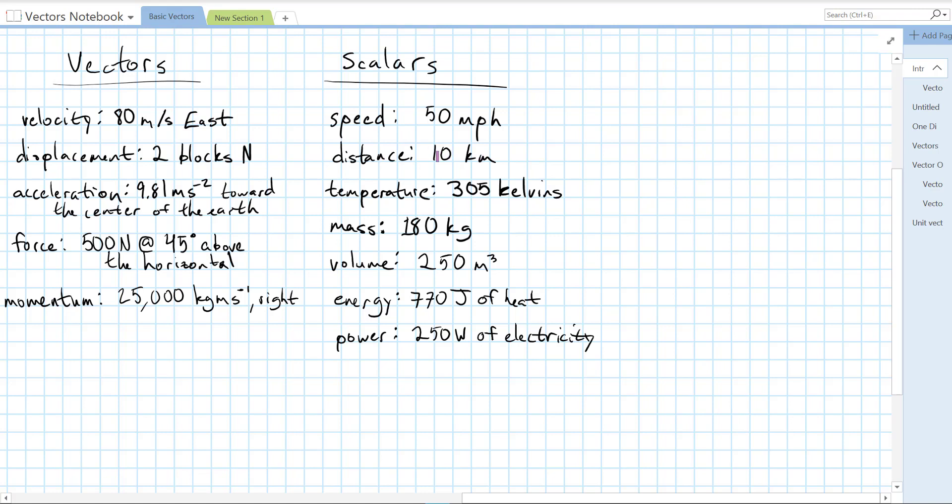Distance, travel 10 kilometers, that is a scalar. Displacement, travel two blocks north, that is a vector. Temperature is measured 33 degrees Fahrenheit or 305 kelvins, that is a scalar. Force 500 newtons at 45 degrees above the horizontal, that is a vector.